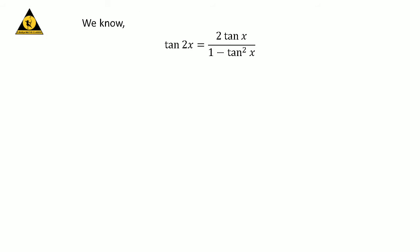We know the famous trigonometry identity: tangent of 2x is equal to 2 times tangent of x upon 1 minus square of tangent of x. Let us plug 22.5 degrees in place of x in the above identity. So, tangent of 2 times 22.5 degrees is equal to 2 times tangent of 22.5 degrees upon 1 minus square of tangent of 22.5 degrees.